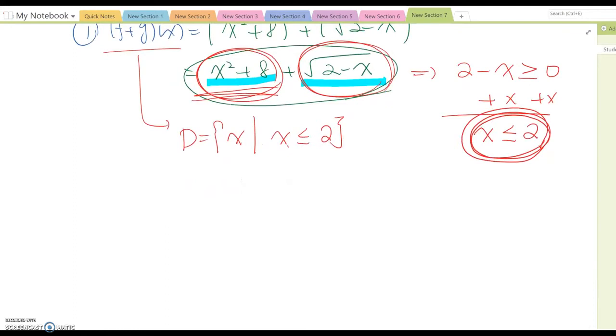So, okay, so number two case, f minus g of x. So we have to do the same thing, so become x squared plus 8 minus square root 2 minus x.